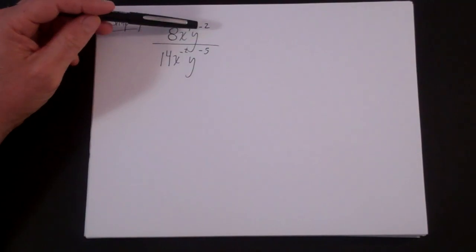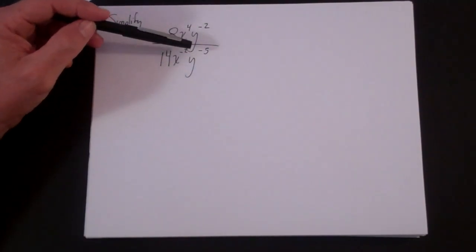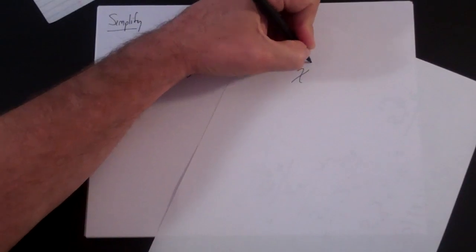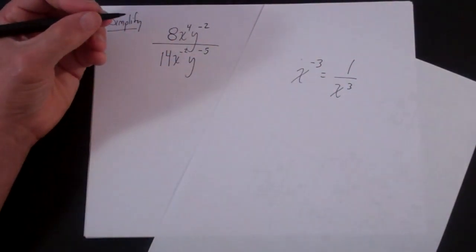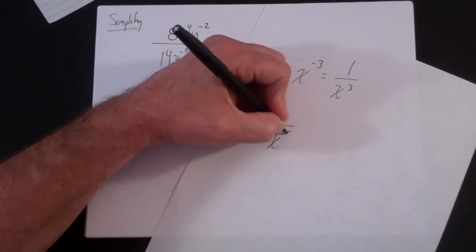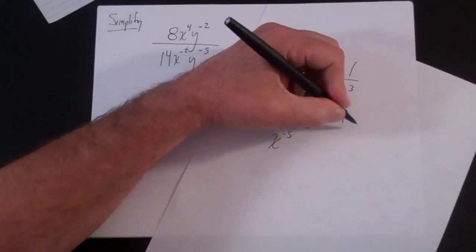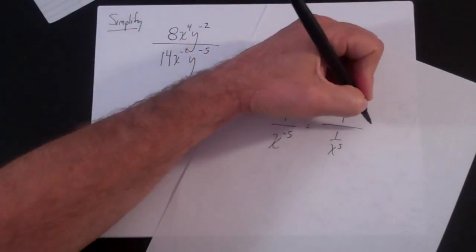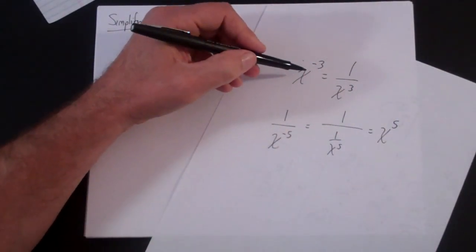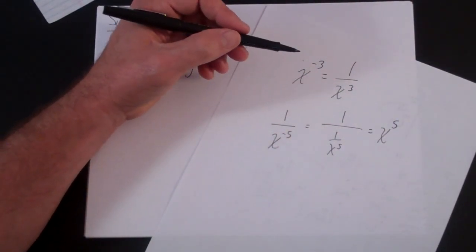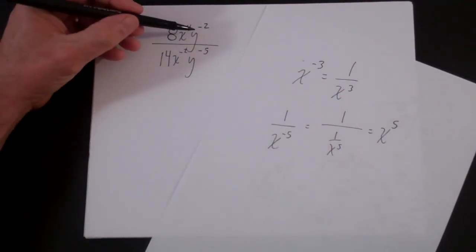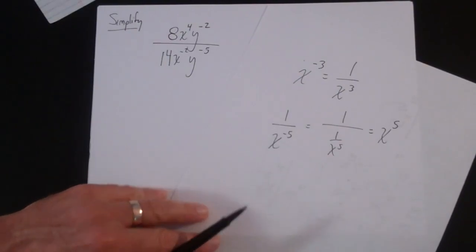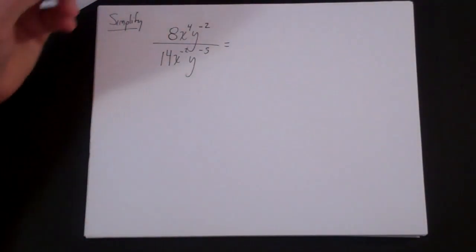I have negative exponents both in the numerator and the denominator, so the first thing I'm going to do is get rid of the negative exponents. The rule: x to the minus 3 is 1 over x to the third. And 1 over x to the minus 5 is simply x to the fifth. A negative exponent means the term is where it shouldn't be — if it's in the numerator with a negative exponent it belongs in the denominator, and vice versa.